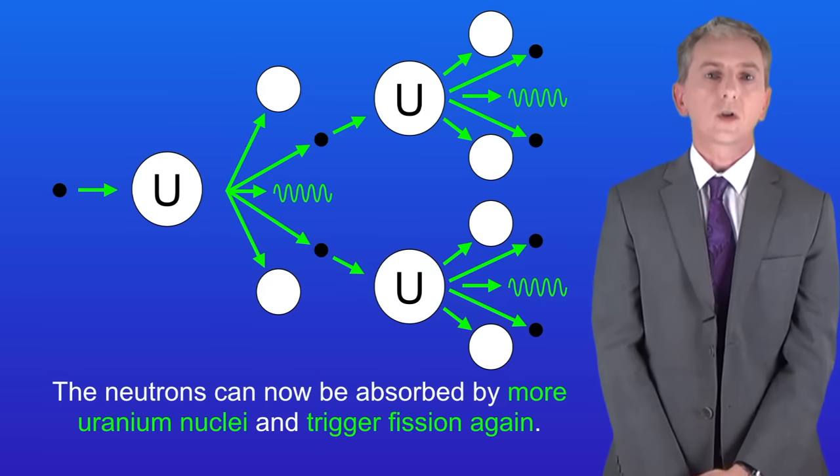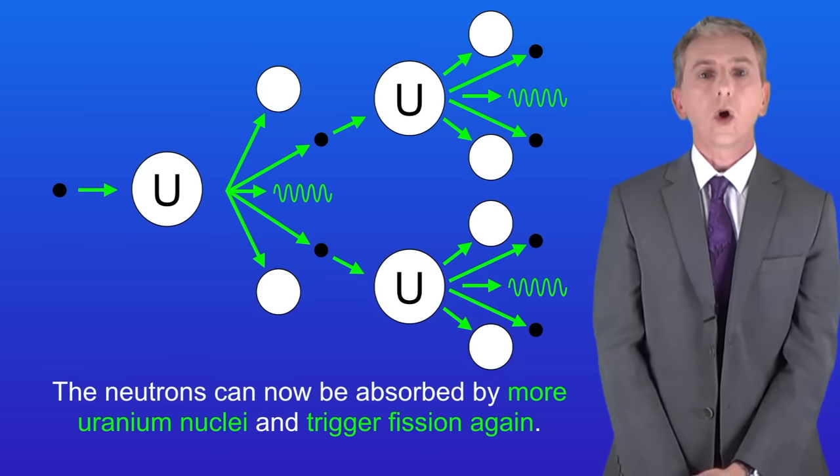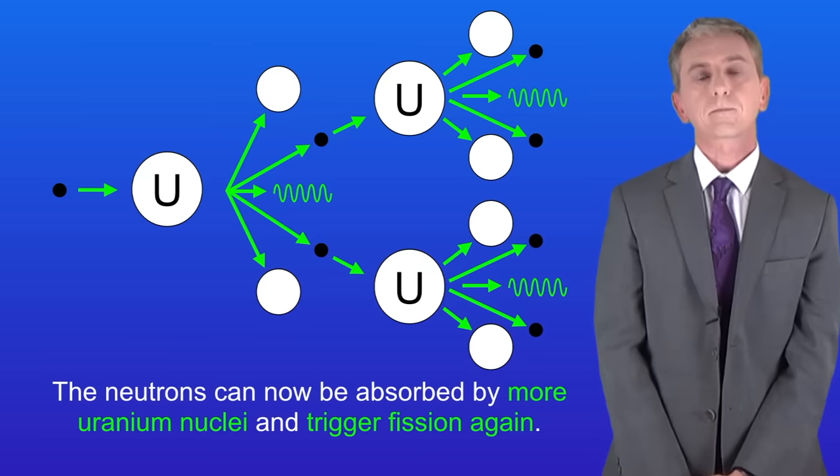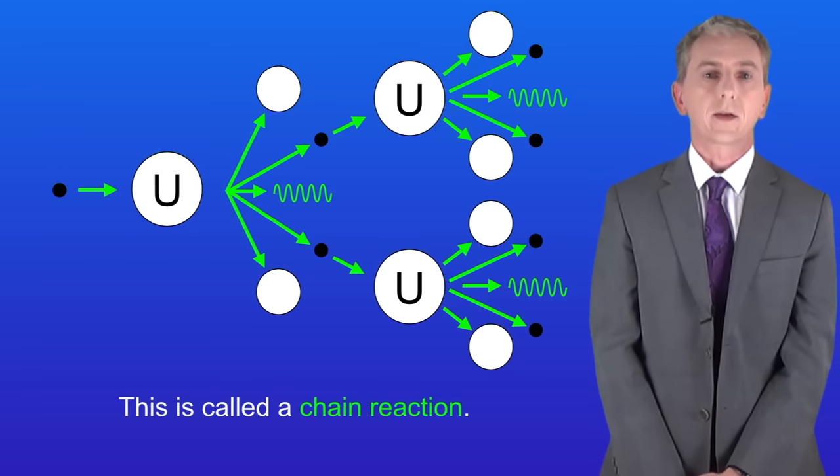So in a very short time a huge number of uranium nuclei have undergone fission and an enormous amount of energy has been released. Scientists call this a chain reaction and it's really important that you learn that.